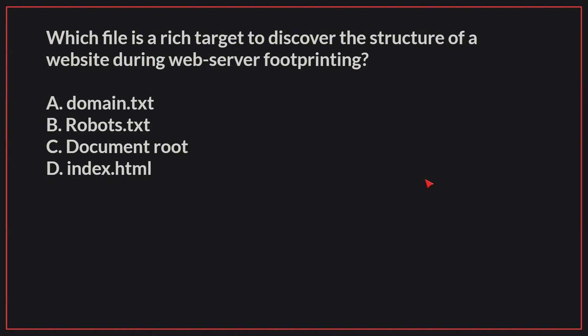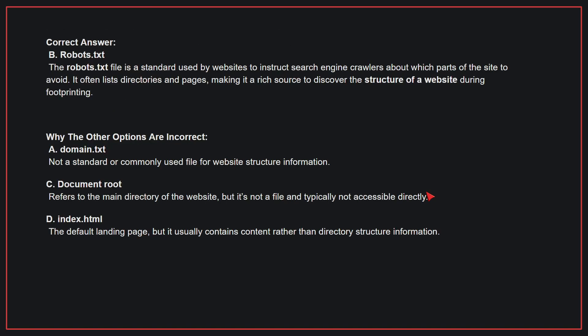Which file is a rich target to discover the structure of a website during web server footprinting? The correct answer is B, robots.txt. The robots.txt file is a standard used by websites to instruct search engine crawlers about which parts of the site to avoid. It often lists directories and pages, making it a rich source to discover the structure of a website during footprinting.